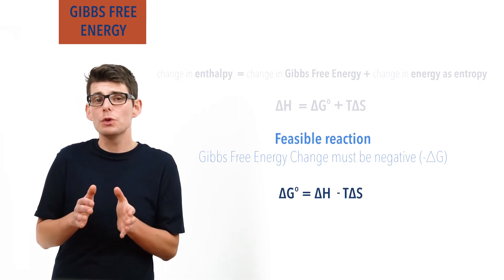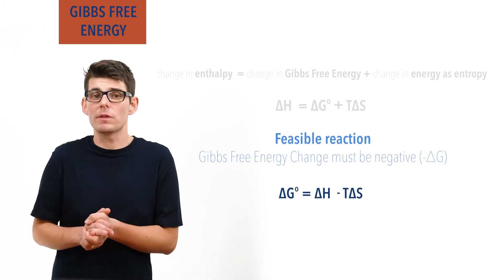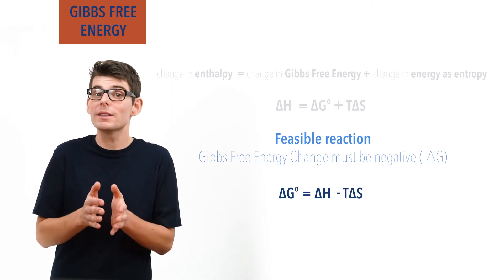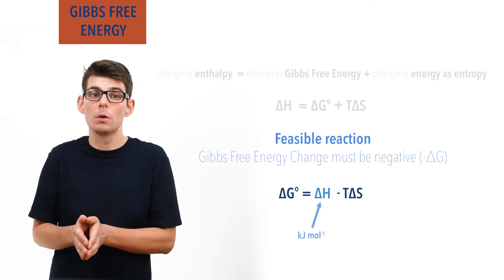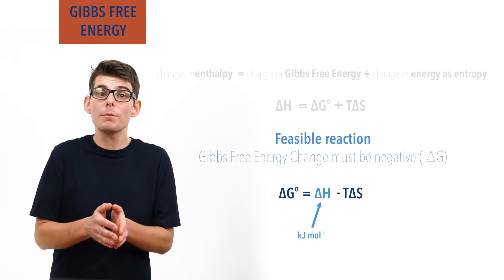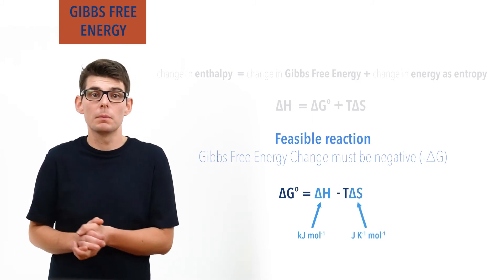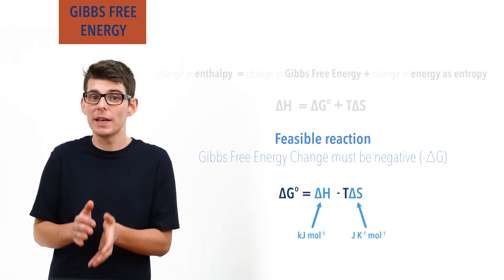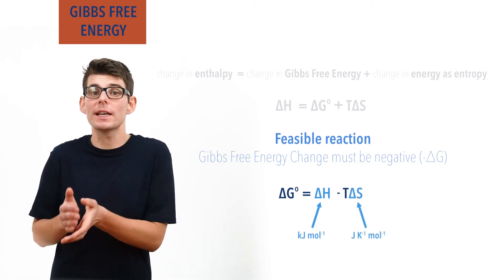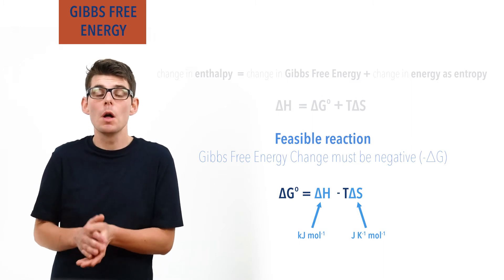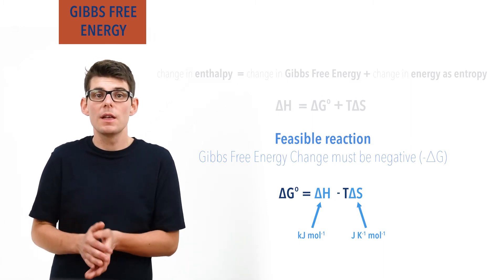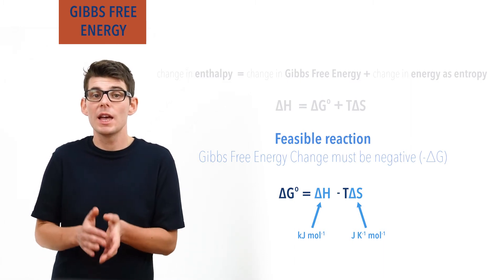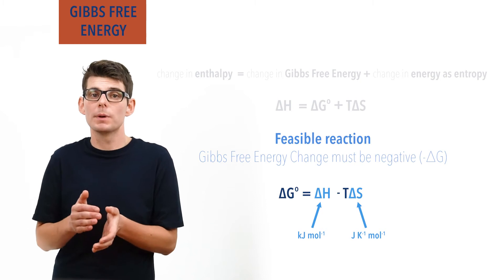Be careful with units in this equation. The units for enthalpy are always kilojoules per mole, and entropy change is joules per Kelvin per mole. Make sure you convert entropy to kilojoules per mole by dividing by a thousand. This gives the units of Gibbs free energy as kilojoules per mole.